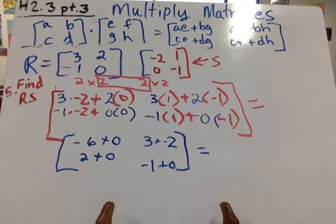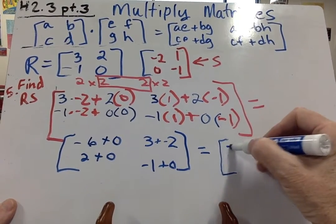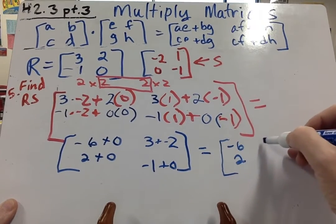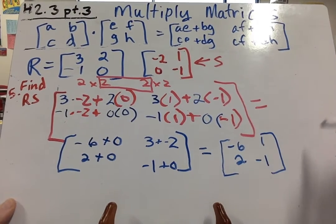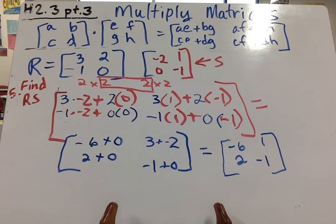Then we get 3 plus negative 2 and negative 1 plus 0. So our final answer over here is going to be negative 6, 2, 1, and negative 1.